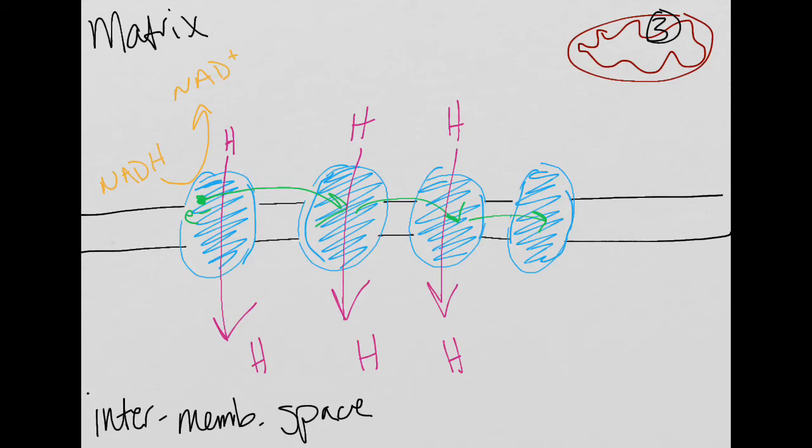So, after this happens, we end up getting more and more hydrogens crossing the membrane into the intermembrane space. We also have, not only do we have NADH, but we also have that other electron carrier, FADH2, that drops its electrons off later into the electron transfer chain, but it basically does the same thing as NADH. It just drops it off later.